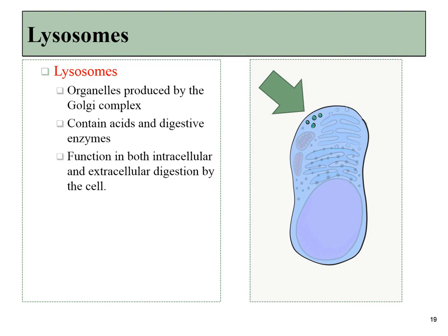The next organelles are lysosomes, produced by the Golgi complex and containing acids and digestive enzymes. They are often mistakenly thought of as little stomachs, but they have nothing to do with nutrients. Think of them more like the recycling station within cells — old proteins and bits of garbage the cell has ingested can be sent to lysosomes for destruction. Nutrients would instead diffuse or be actively transported across the plasma membrane.